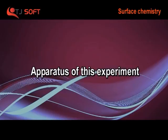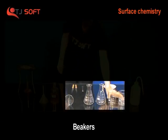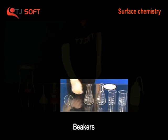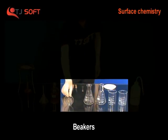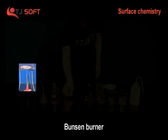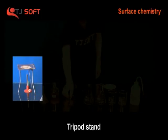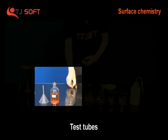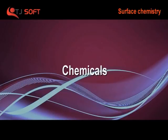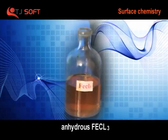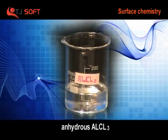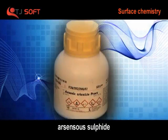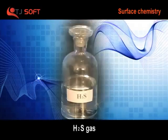Apparatus: 50 ml, 100 ml, and 250 ml beakers, Bunsen burner, tripod stand, glass rod, dropper, and test tubes. Chemicals: anhydrous FeCl3, anhydrous AlCl3, arsenous sulphide, and H2S gas.